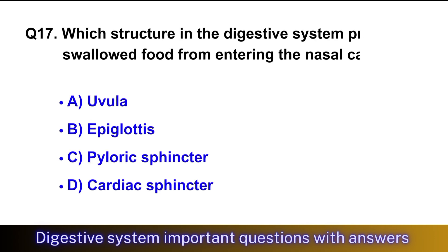Question No. 17: Which structure in the digestive system prevents food from entering the nasal cavity? The right option is option A, uvula.